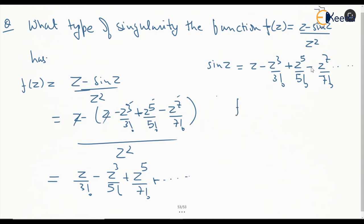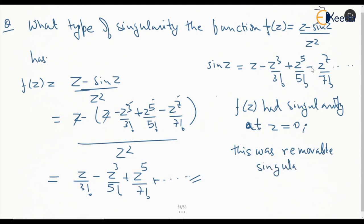Where on one side this f(z) had singularity at z equal to 0, the new form of f(z) does not have anything like that. So this was removable singularity.